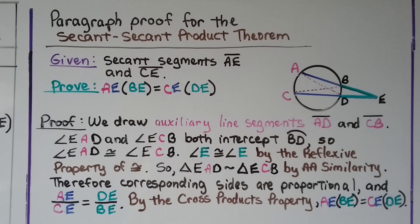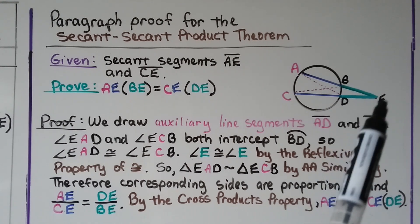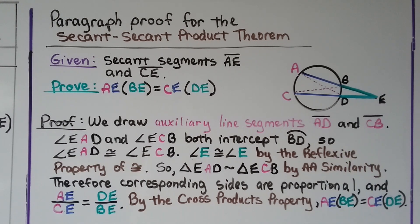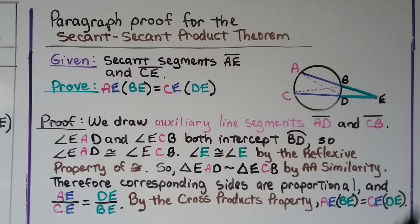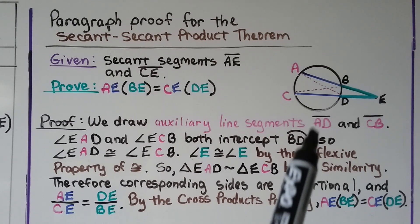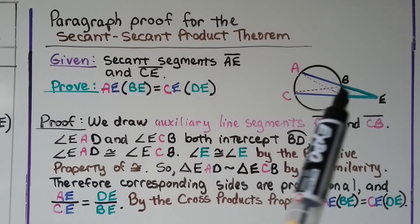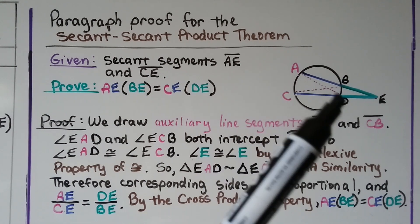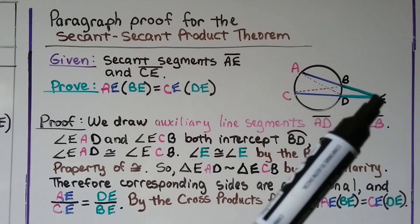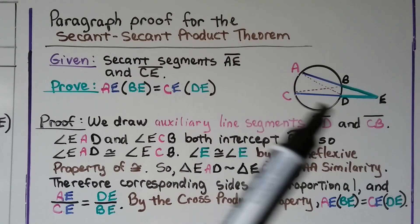Angle EAD is congruent to angle ECB, and angle E is congruent to angle E by the reflexive property of congruence. Triangle EAD, this thin little triangle up here, is similar to triangle ECB, this little thin triangle here, by AA similarity, angle-angle similarity. We have angle A and E, and we have angle C and E.